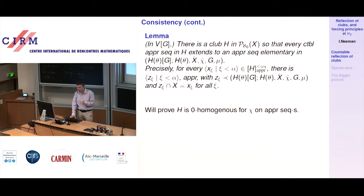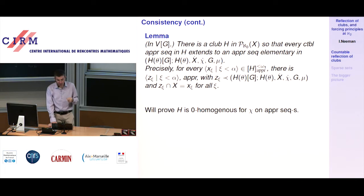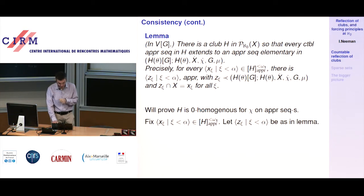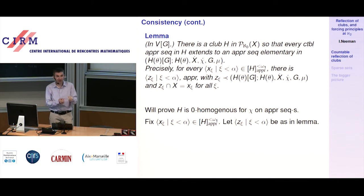Assuming the lemma, let's prove H is 0-homogeneous for chi. The idea: any approachable sequence from X can have its image realized as an approachable sequence in the club witnessing homogeneity for the pointwise image of X. Fix some approachable sequence x from H. Let Z be as in the lemma — so each Z_xi is an elementary extension of x_xi, elementary in H_theta. Now create the generic elementary embedding: start with the supercompactness embedding from V to V*, the ultrapower by the supercompactness measure.